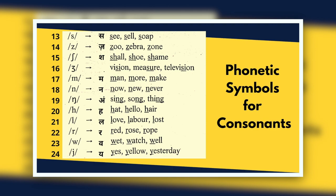Now let's discuss the rest of the twelve phonetic symbols for consonants. The thirteenth one is S, as in sea, cell, soap. The fourteenth is Z, as in zoo, zebra, zone. The fifteenth is SH, as in shall, shoe, shine. The sixteenth is ZH — there's no Hindi equivalent because the sound is so unique. If you pronounce the word 'vision,' 'measure,' 'television,' that sound of ZH is what the symbol is meant for.